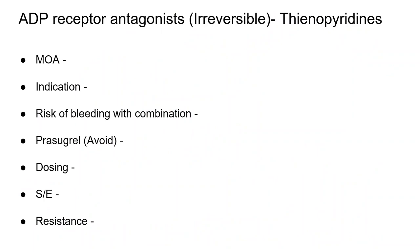The next group is ADP receptor antagonists, divided into two groups: irreversible and reversible. Aspirin is also an irreversible inhibitor. The significance of irreversible inhibitors is that once the platelet is inhibited, the effect stays until new platelets are formed. The lifetime of platelets is around five to seven days.